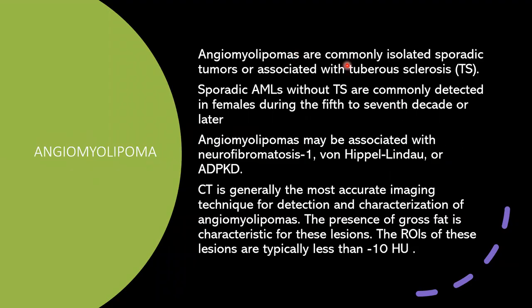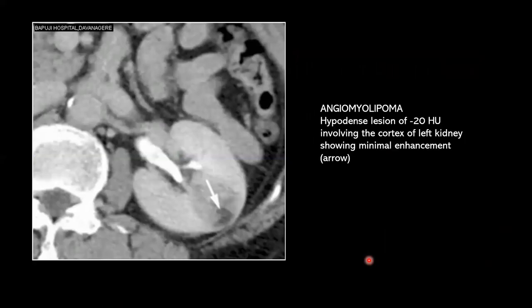Angiomyolipomas are commonly isolated sporadic tumors or associated with tuberous sclerosis. Sporadic AMLs without tuberous sclerosis are more commonly seen in females in the 5th to 7th decades. AML is also associated with neurofibromatosis type 1, VHL, or ADPKD. CT is the most accurate method because the presence of macroscopic fat is characteristic; the ROI of the lesion is typically less than -10 HU. This case shows a hypodense lesion of -20 HU involving the cortex of the left kidney with minimal enhancement.